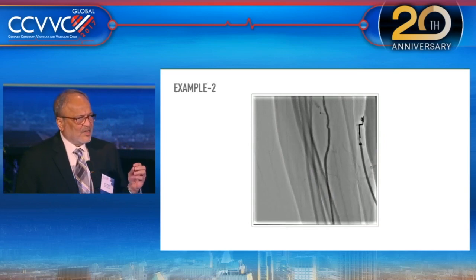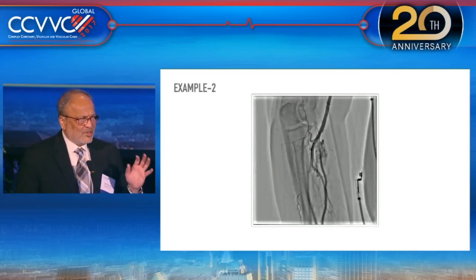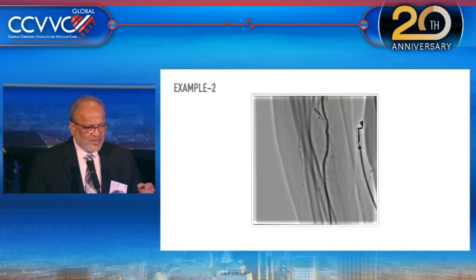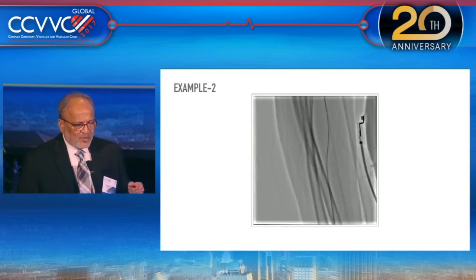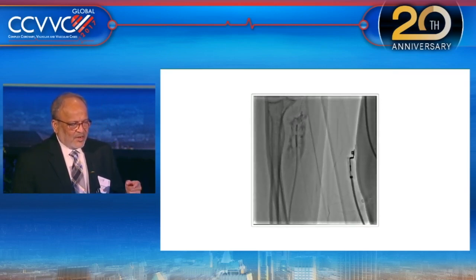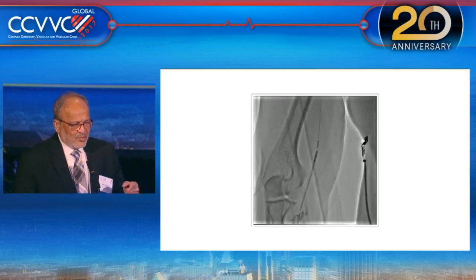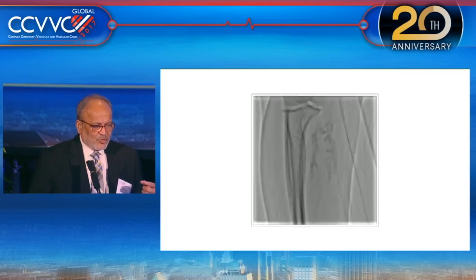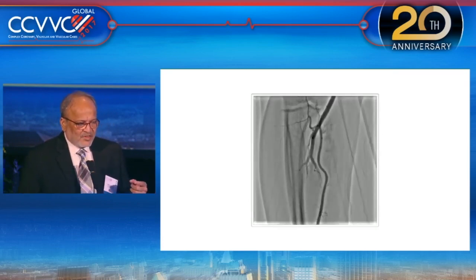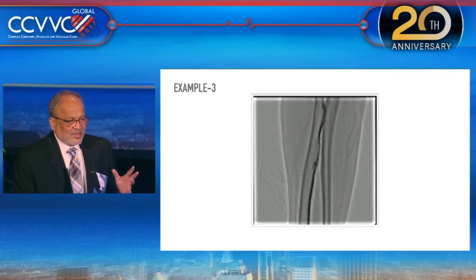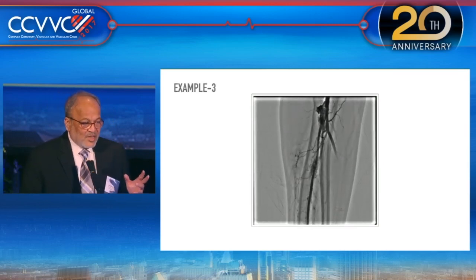Injection after the procedure can confirm that the perforation is sealed. Another example of a bad perforation going into the muscle — balloon-assisted tracking was used, and once the procedure was finished we injected and confirmed that the perforation was sealed.